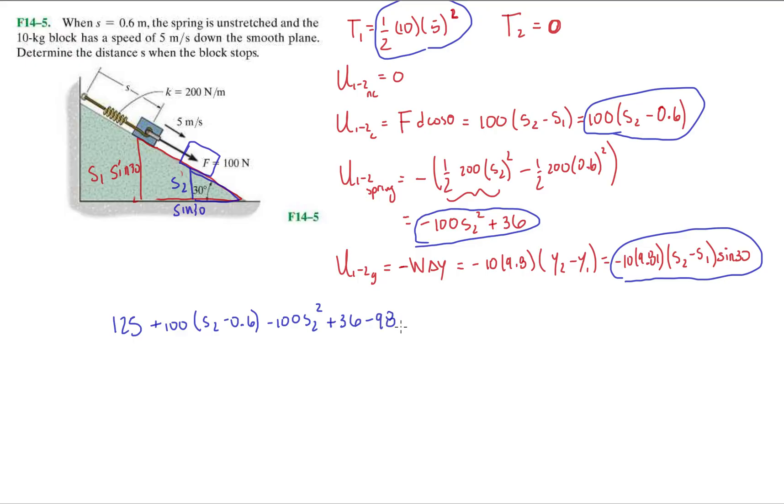And then, minus 98.1 S2 minus S1 is 0.6. I don't know why it's so laggy right now. Okay. All right. So, that's the left-hand side of the work-energy relationship. We're going to do principal. So, this one, that's that term. This whole thing is this term over here. And all that is equal to T2, which is 0.